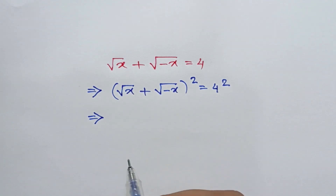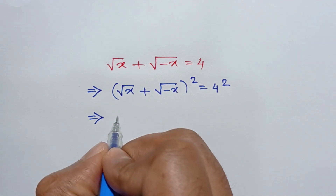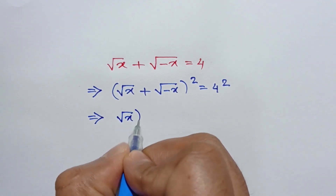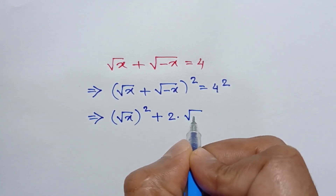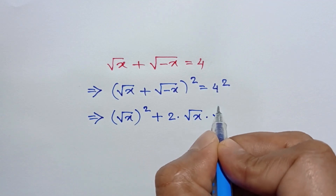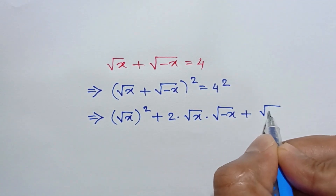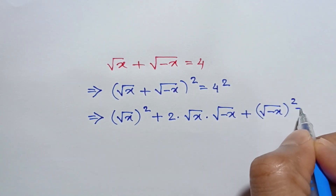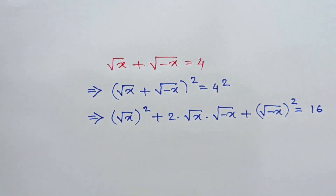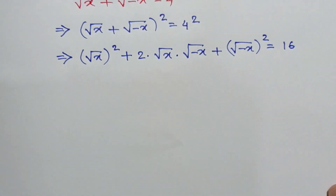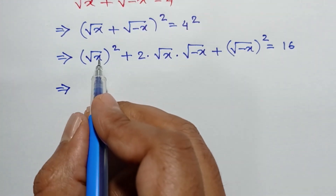We can write: square root of x, whole squared, plus 2 times square root of x times square root of negative x, plus square root of negative x, whole squared, is equal to 4 squared, which is equal to 16.